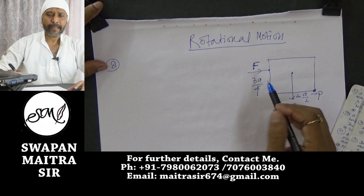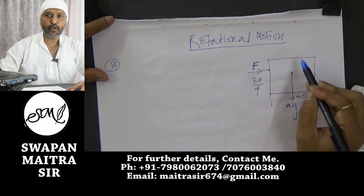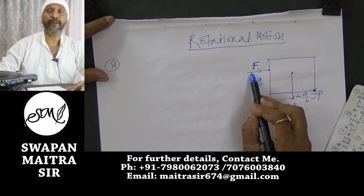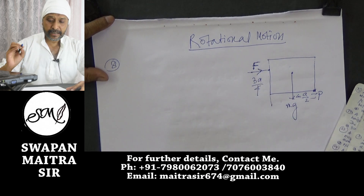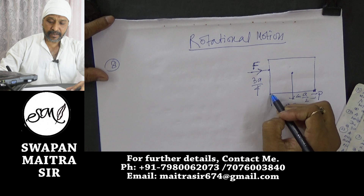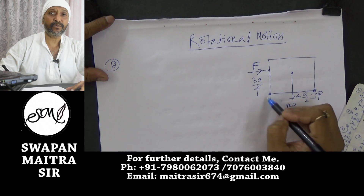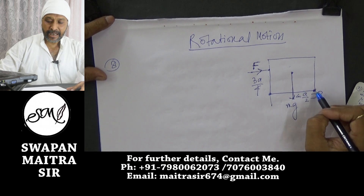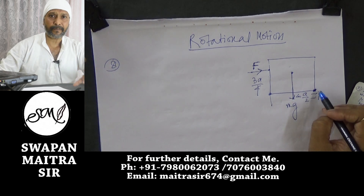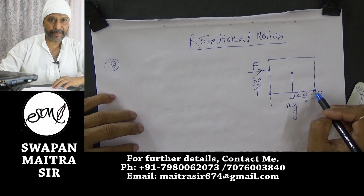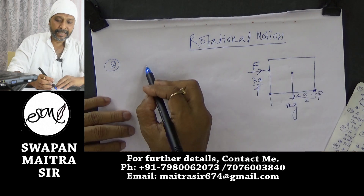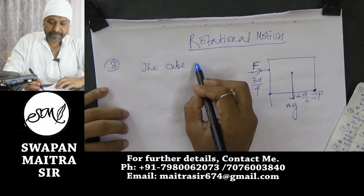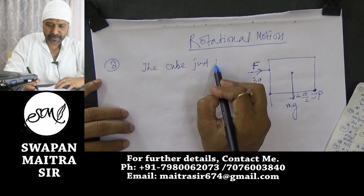Here is the diagram. A cube with force F applied at 3A/4 from the ground, and Mg acting downward at the center of gravity of the cube. The cube just topples about point P.